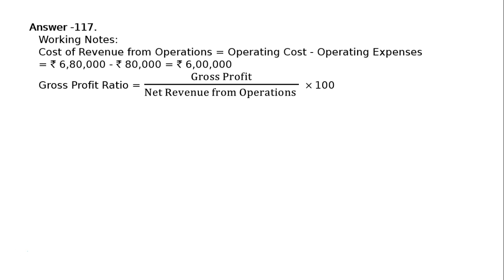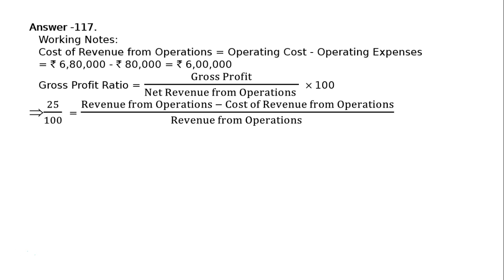Gross profit ratio equals gross profit upon net revenue from operations into 100. We take this as an equation: 25/100 for gross profit ratio. We forego multiplying 100 on the right-hand side. So, gross profit equals revenue from operations minus cost of revenue from operations, divided by revenue from operations. Taking revenue from operations as x: 25/100 equals (x minus Rs. 6,00,000) divided by x.